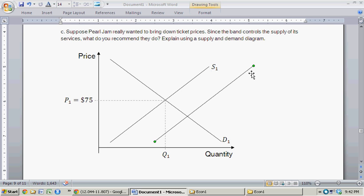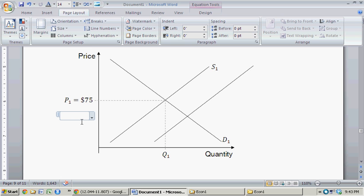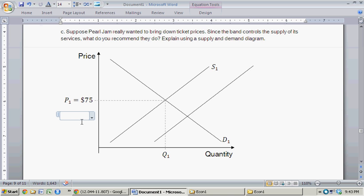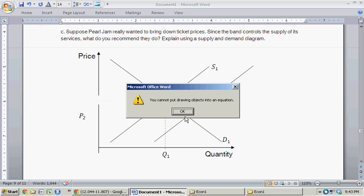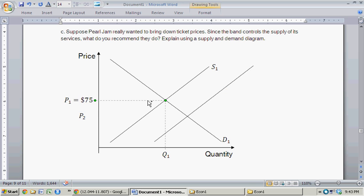So you have the old supply curve here, and you have the new supply curve over here. And given their expansion in supply, you'd have this new equilibrium price down here. So the next best option, or the best option actually, is probably to just simply increase their supply, creating this new equilibrium price down here. And that would effectively lower the price.